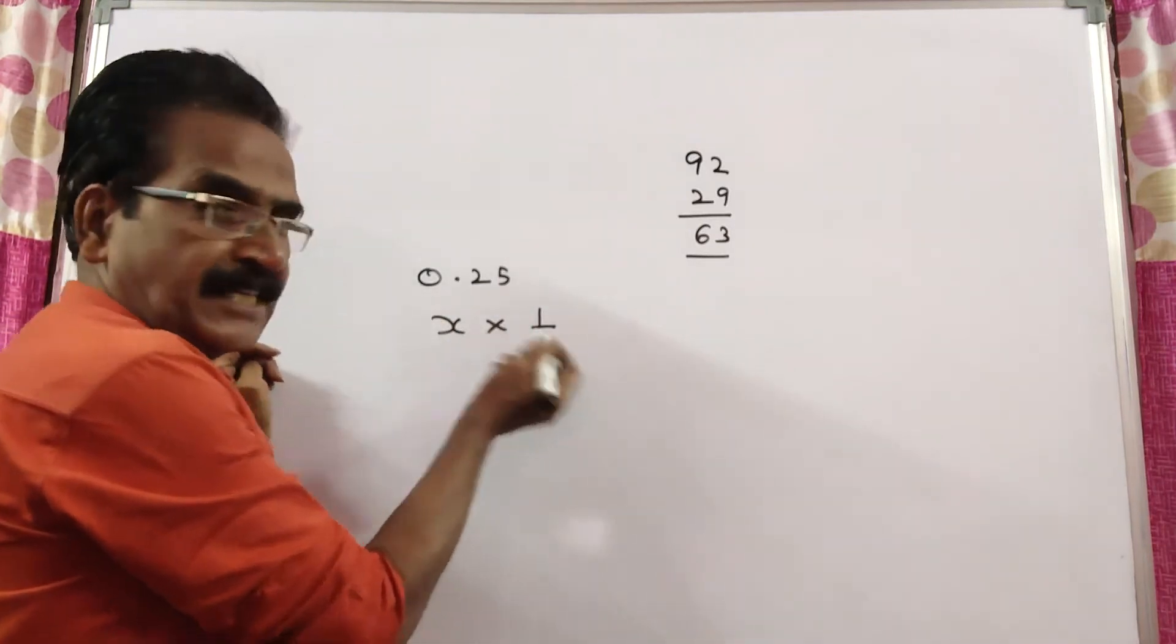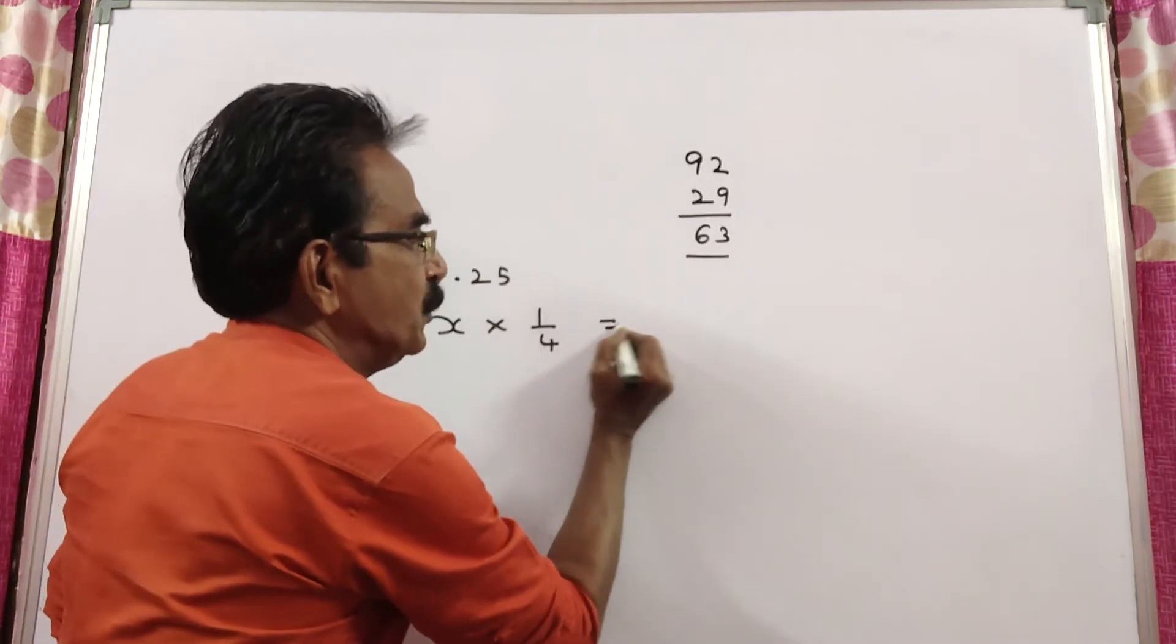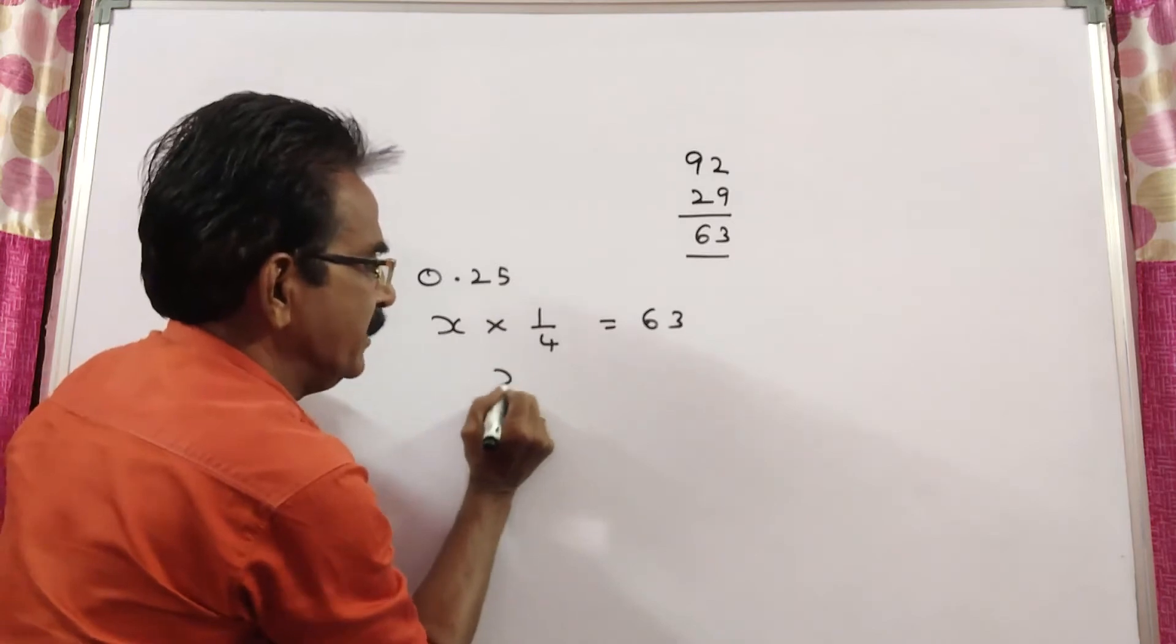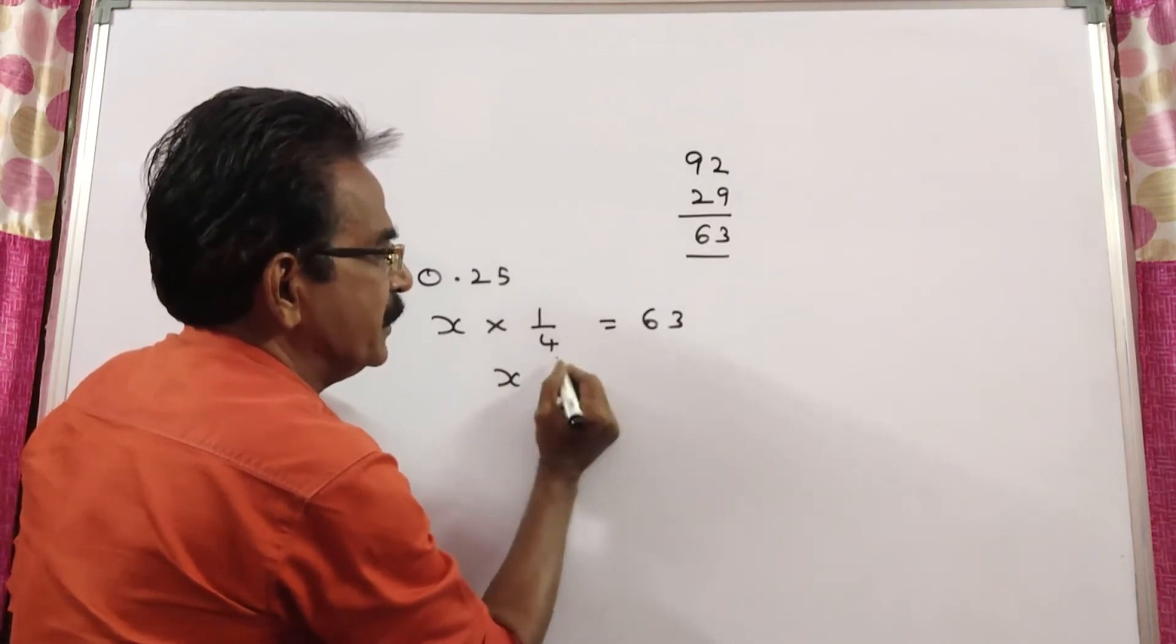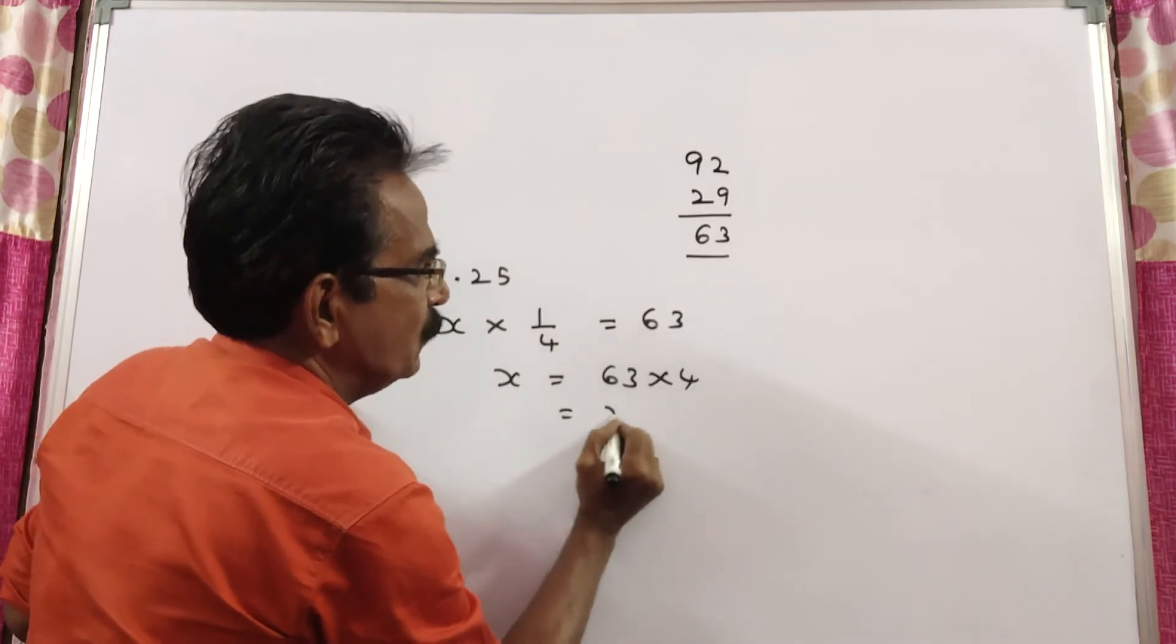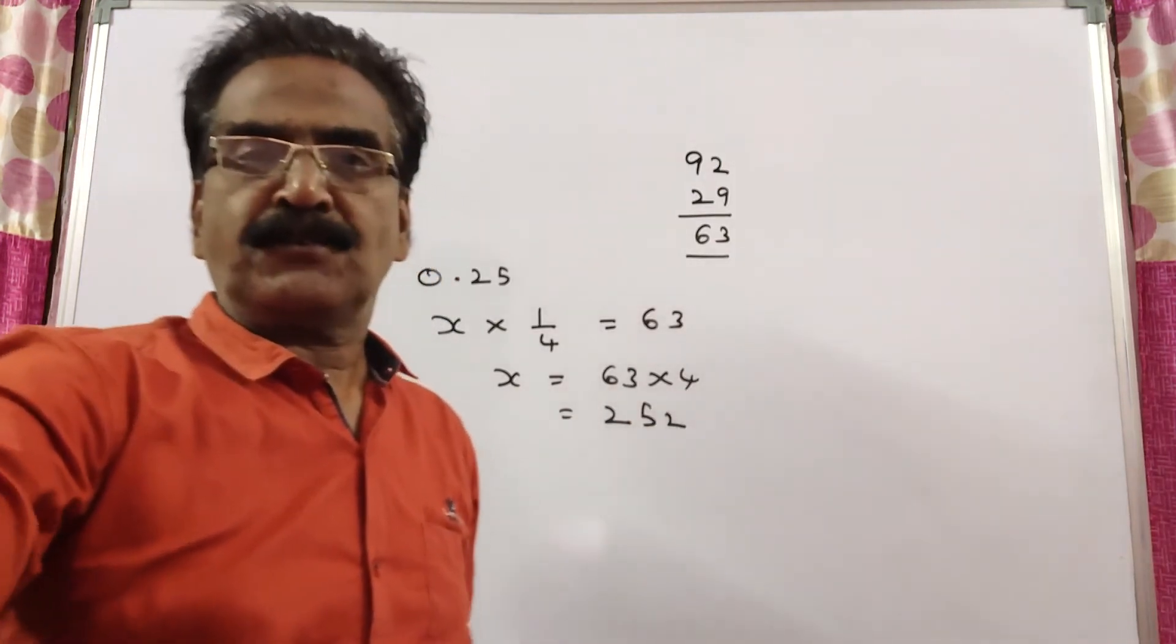Now, the total increase x into 1 by 4 gives total increase x into 1 by 4. That is equal to 63. So, x is equal to 63 into 4. 63 into 4. That is equal to 252 is the total number of students.